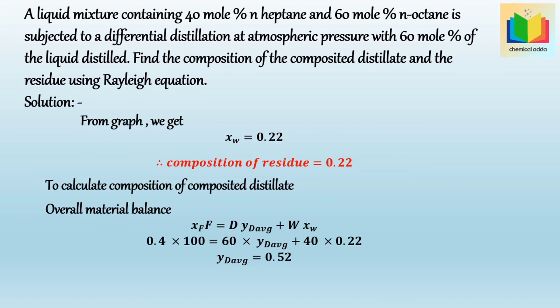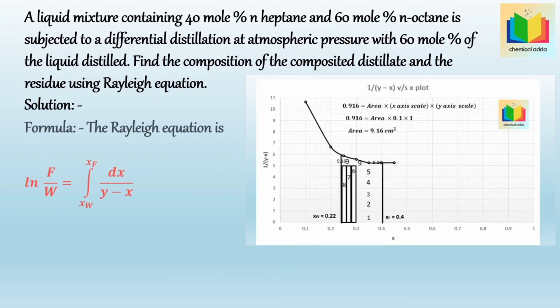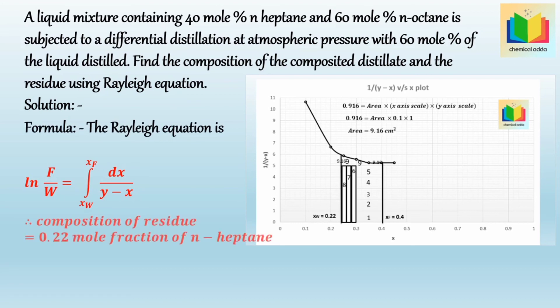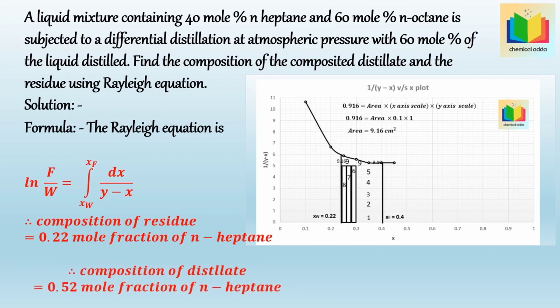In summary, the residue composition X_W = 0.22 (obtained using the Rayleigh equation), and the distillate composition Y_D(average) = 0.52 (obtained using the overall material balance).